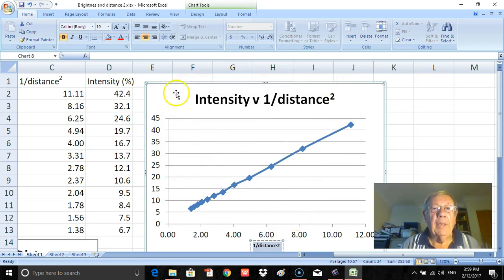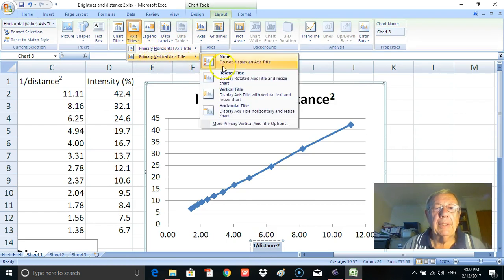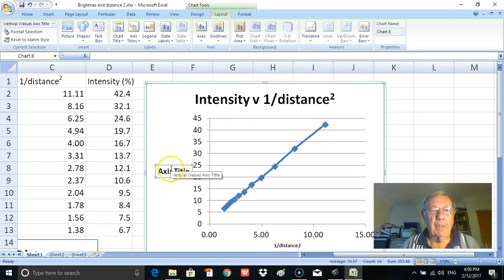And again, the label and units for the vertical axis. So I'll go up to layout again, across here to axis titles, down here to vertical axis, and the horizontal one. And type in here: Intensity (%).